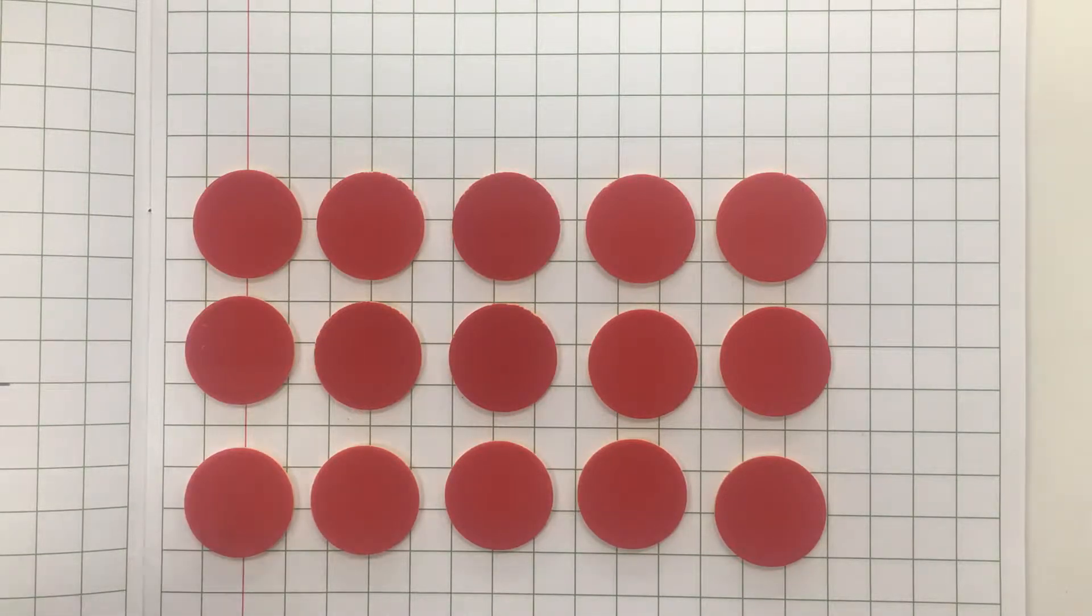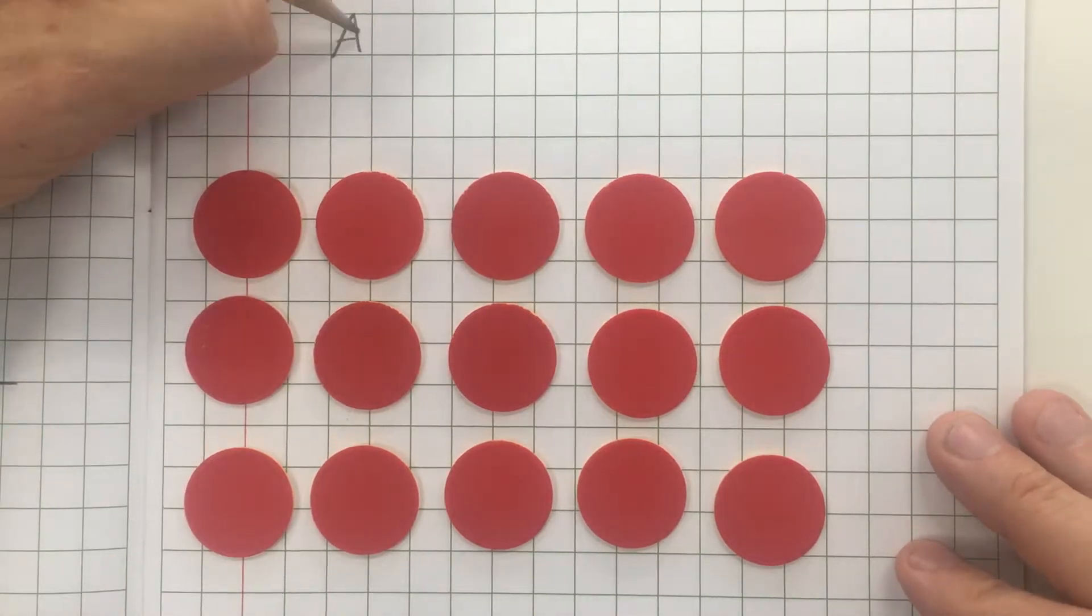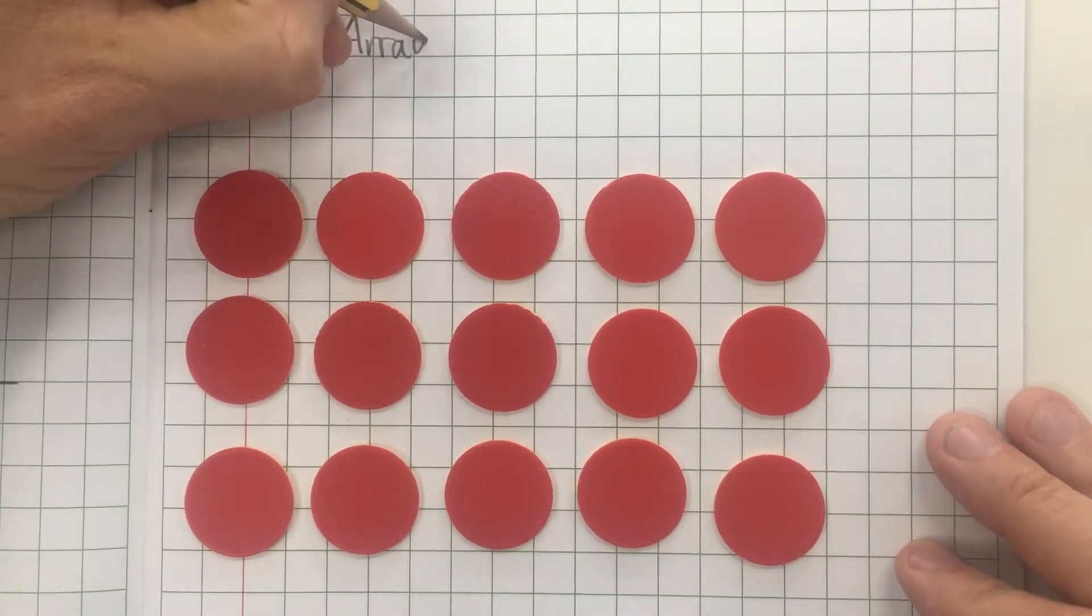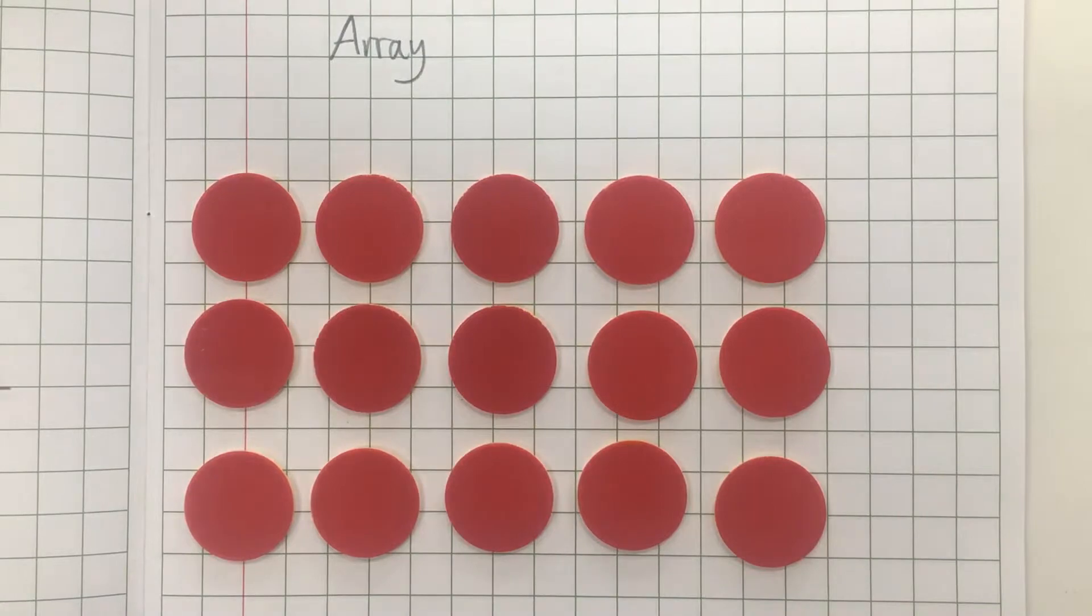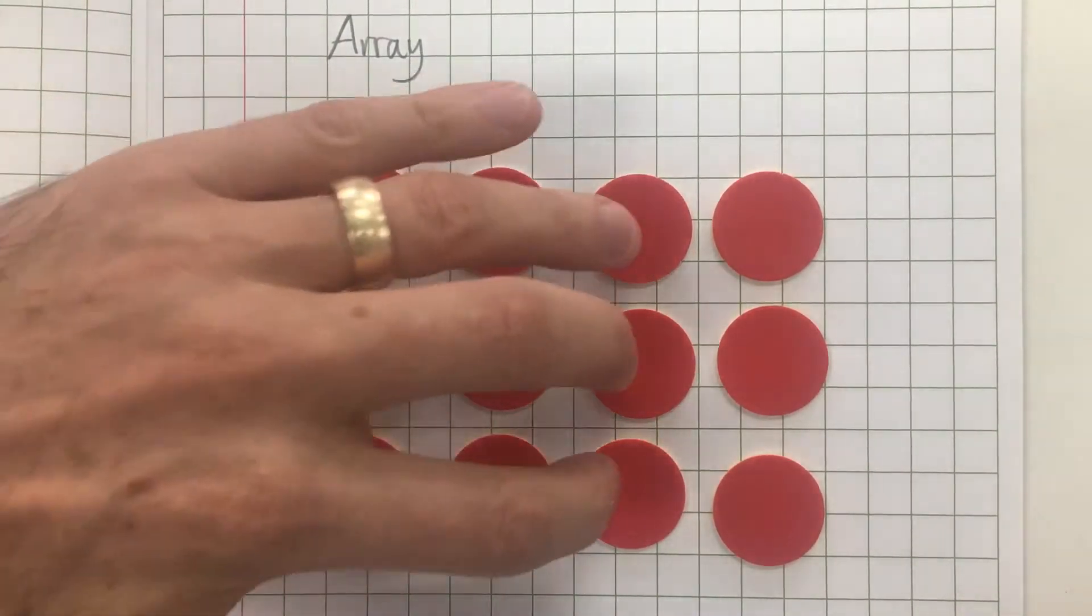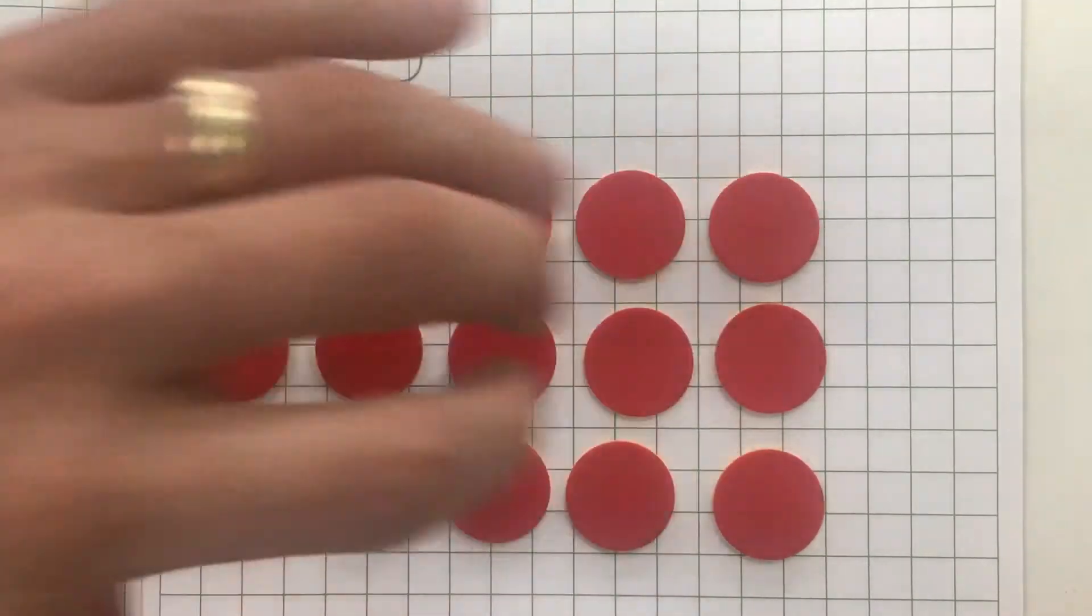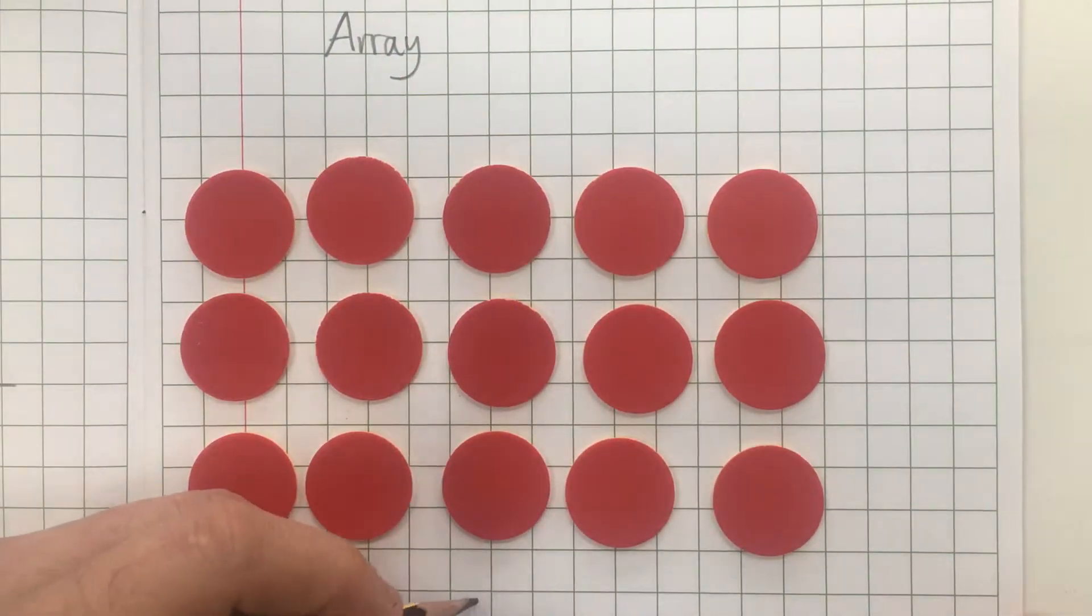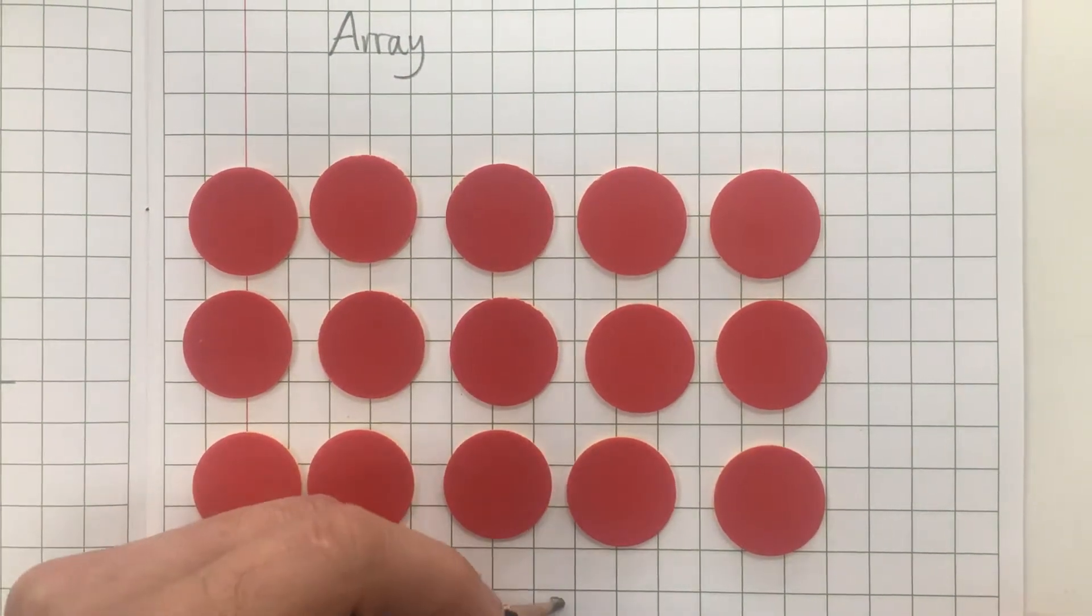So what I've got here is an array which is a collection of rows and columns. In my array I've got groups of three—three groups, four groups, five groups of three. So I've got five groups of three.